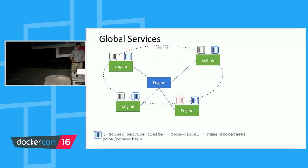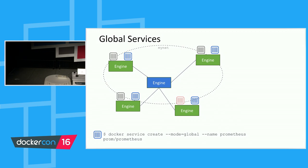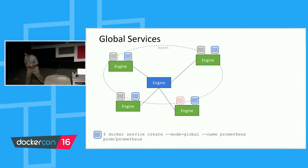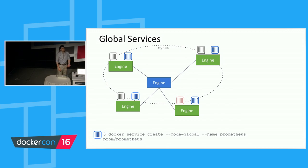I want to talk about global services — we didn't cover this in the keynote but it's important for many use cases. Sometimes you want a container running on every machine in your cluster, and when you add a new machine, you want that container automatically added. An example is something like cAdvisor or Prometheus — a utility container needed for logging or metrics. To do this, it's the same 'docker service create', but you specify 'mode=global' and you'll get one copy of that container on every node in the cluster.